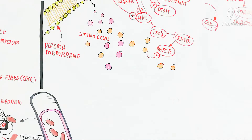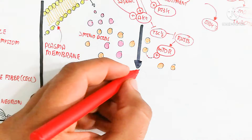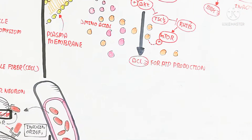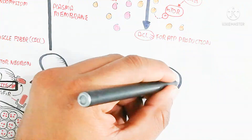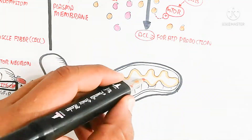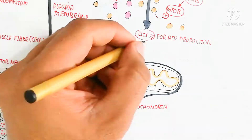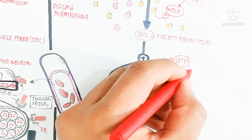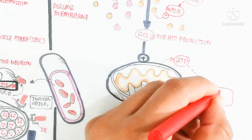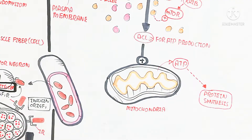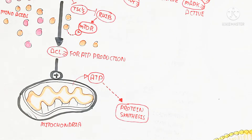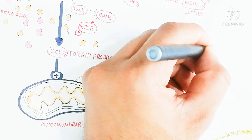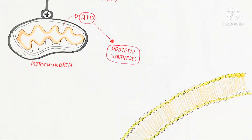Here is the inhibition of TSC1 and TSC2, which inhibits RHEB, but inhibition of TSC1/2 triggers the mTOR complex — this mTOR pathway is anabolic. ACL is used for ATP production from the mitochondria. Increased ATP efficiency leads to enhanced protein synthesis, as ATP is used for protein synthesis.